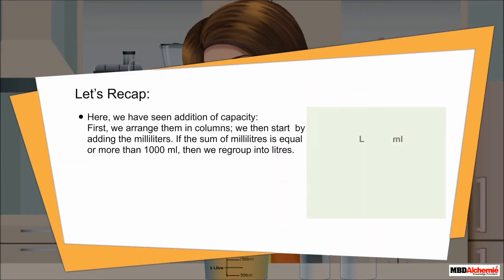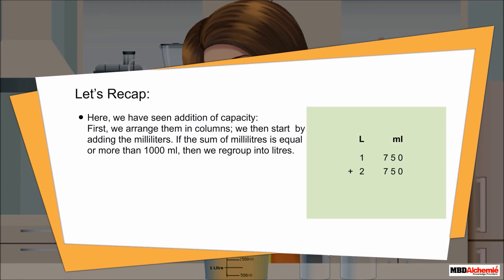Let's recap. Here we have seen addition of capacity. First, we arrange them in columns. We then start by adding the milliliters. If the sum of milliliters is equal or more than 1 thousand milliliters, then we regroup into liters.